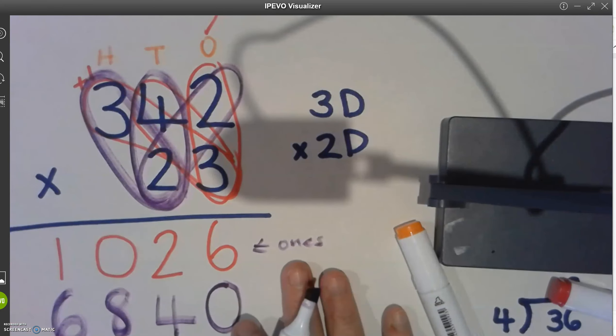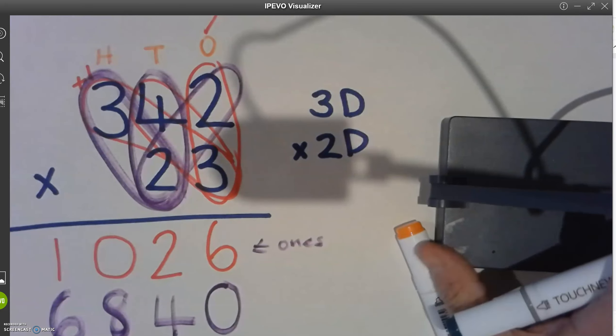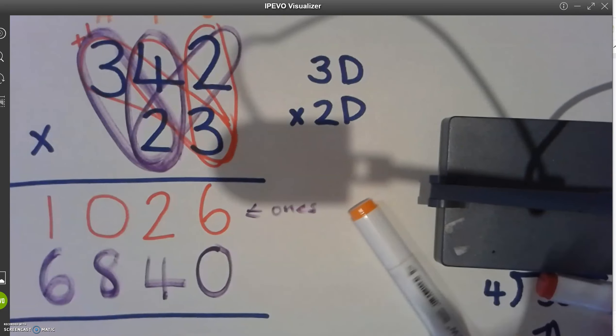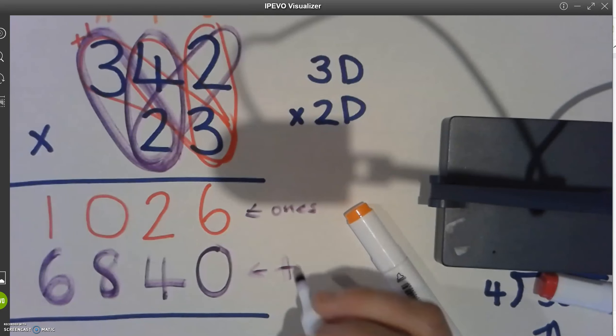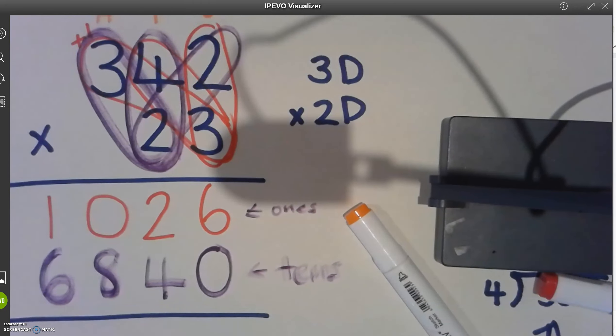You should have that multiplication. So we've done our ones. We've done our tens. And now the last, oh, my pen's running out. The last part is to add those two together. Let's do that together now.